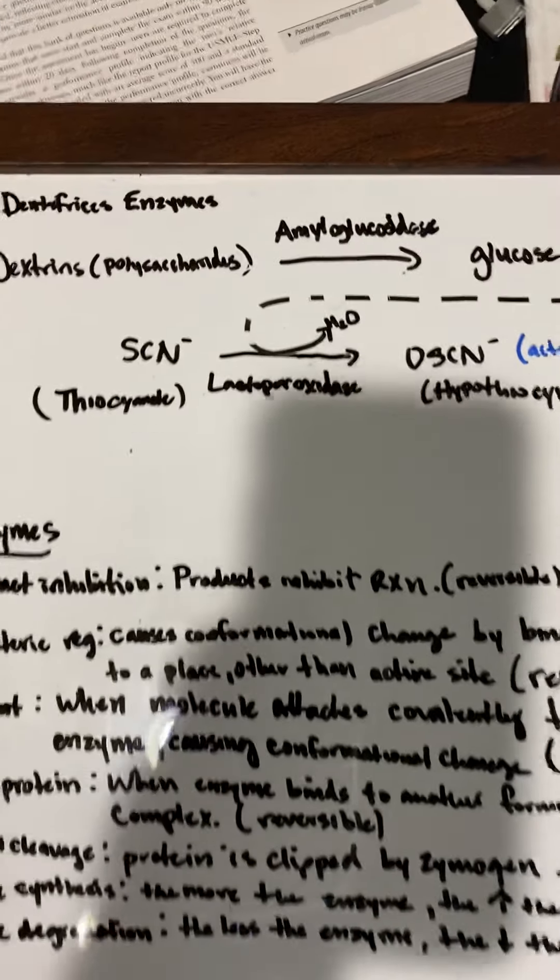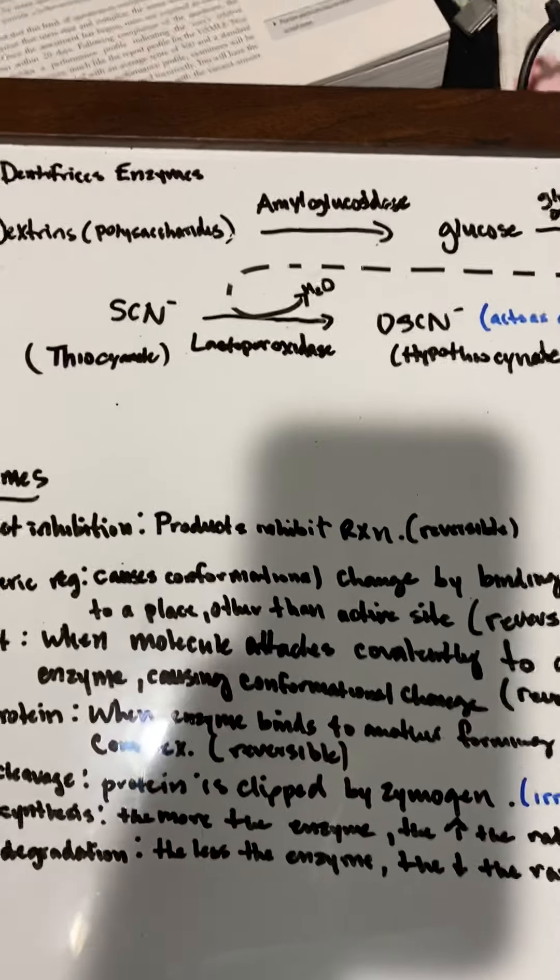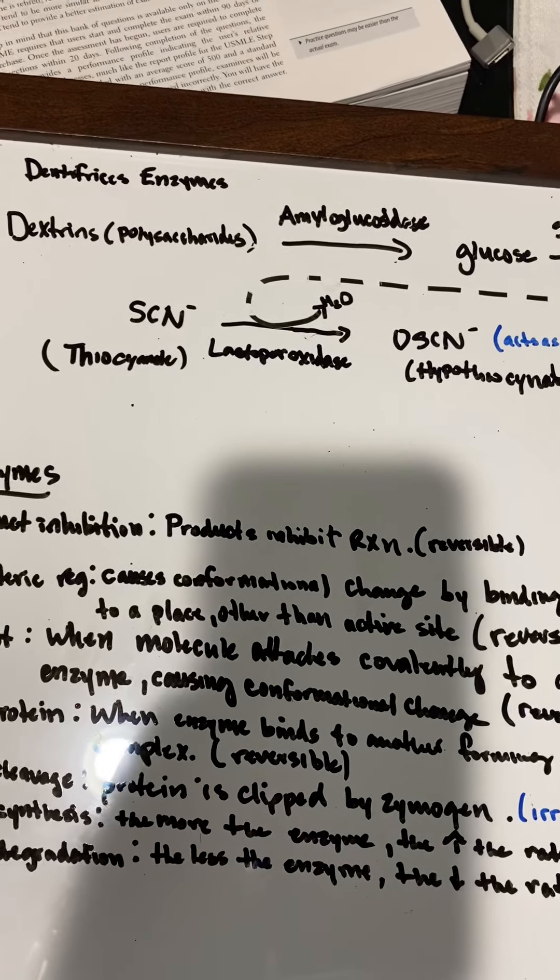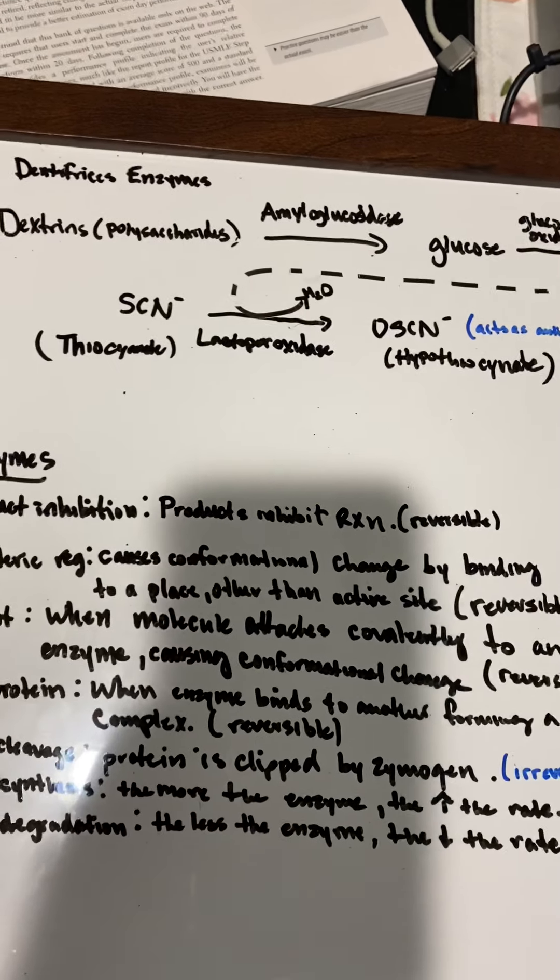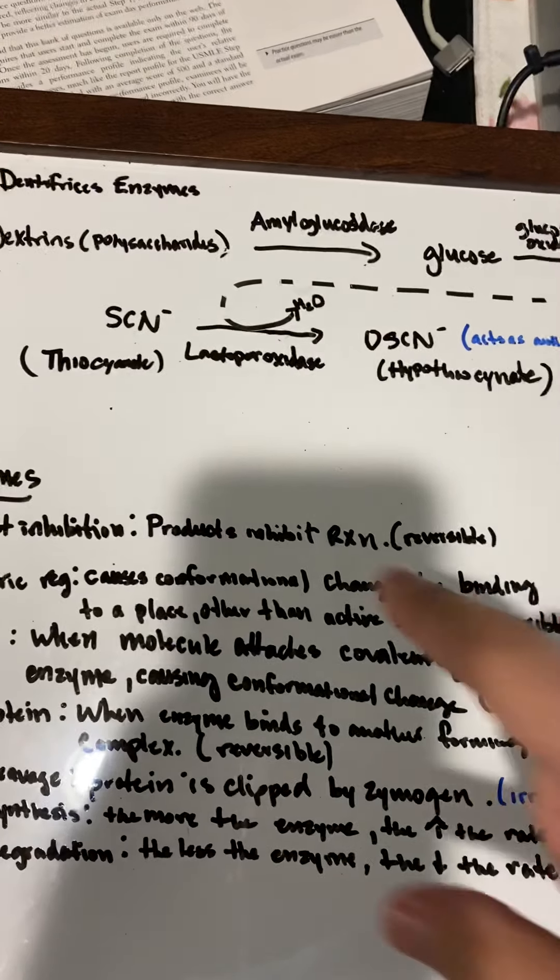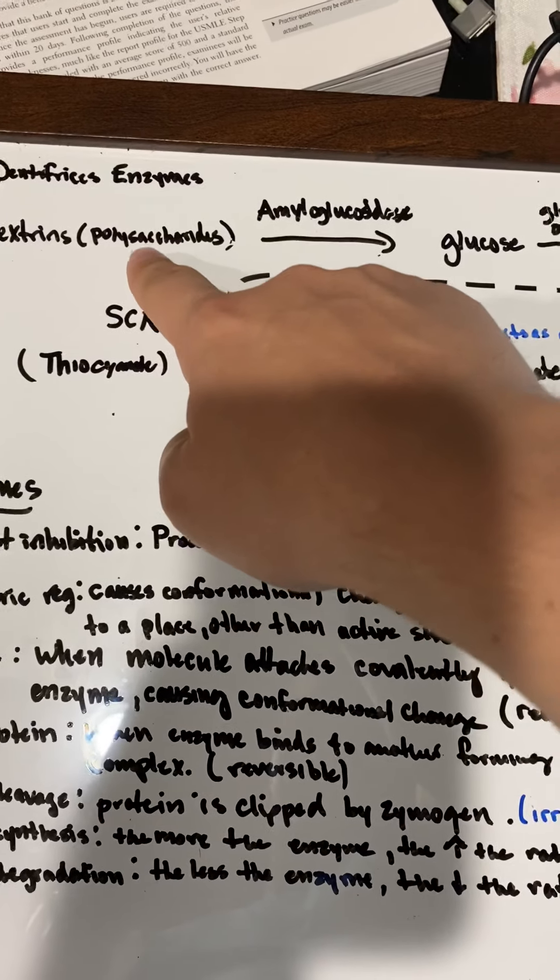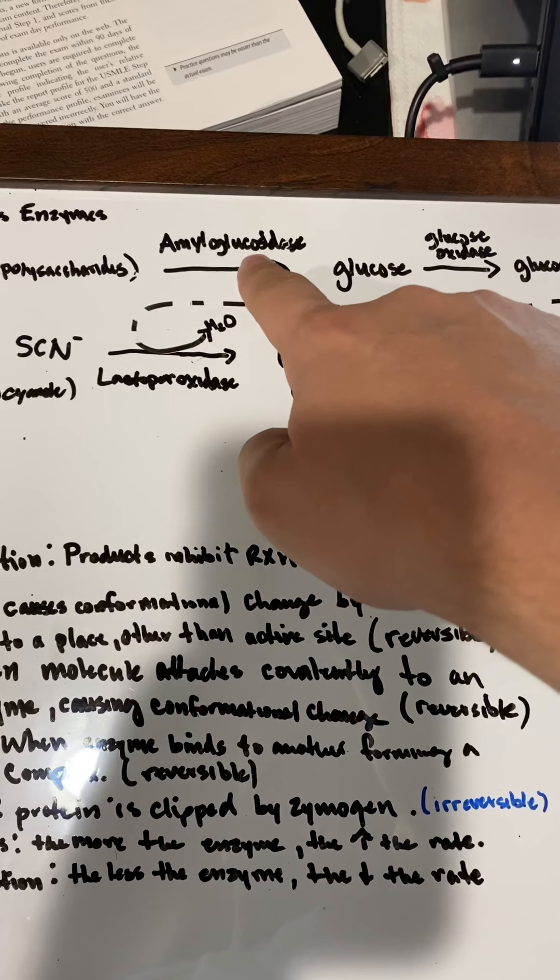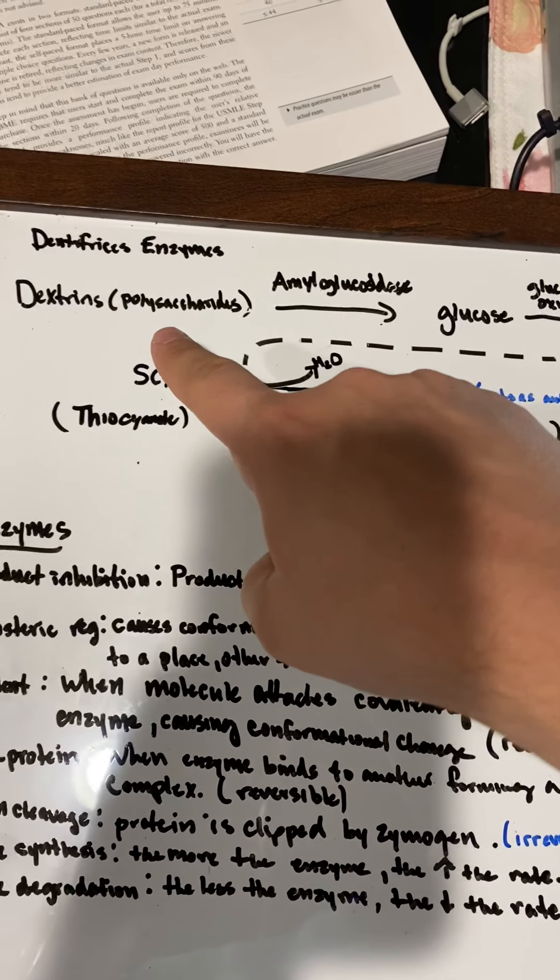Dentrifices enzymes are found in non-FDA approved toothpaste with fancy ingredients that claim antimicrobial properties. This is because they have things like glucosidase or however you say it.